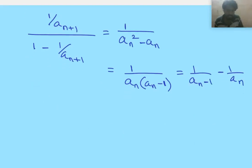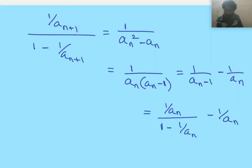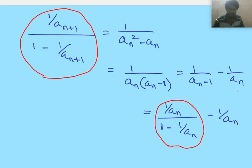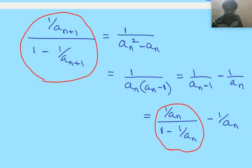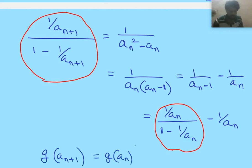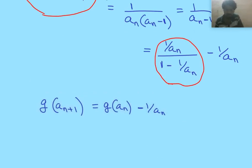We can write this as (1 by a_n) divided by (1 minus 1 by a_n). The expressions on both sides are in the same form. Let us define the function g(x) as (1/x) divided by (1 minus 1/x). Calling the left side g(a_{n+1}) and the right side g(a_n), and rearranging, we have 1 by a_n equals g(a_n) minus g(a_{n+1}).